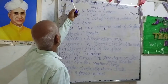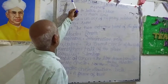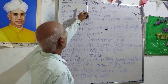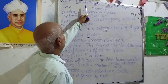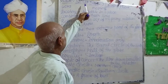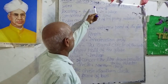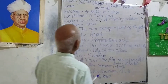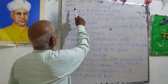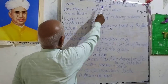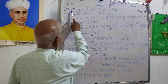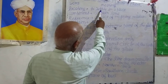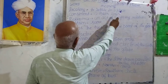Good afternoon, students. I am going to rewrite the word meanings for SST Chapter 2, Locating Places. The first term is: locating — to settle in a place.